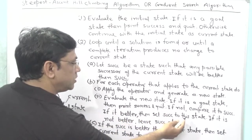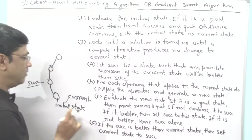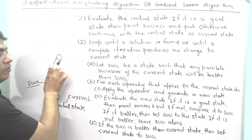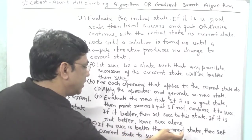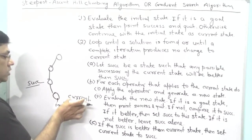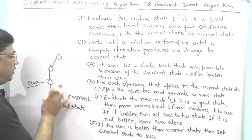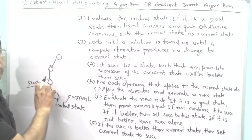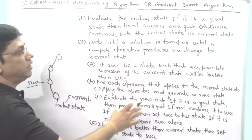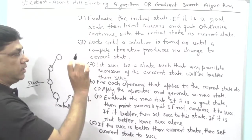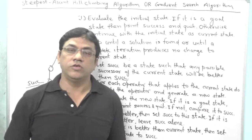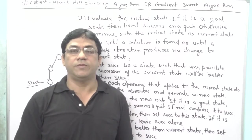If SUCC is better than the current state, set the current state to SUCC; otherwise it comes out. So keep in mind: if the new successor is better than the current, you provide it as the successor node; otherwise it comes out. I hope you understood the concept. Please like and share my videos, watch all videos on artificial intelligence, subscribe to my channel, and thanks for watching.